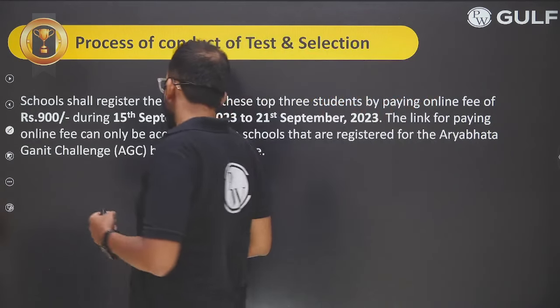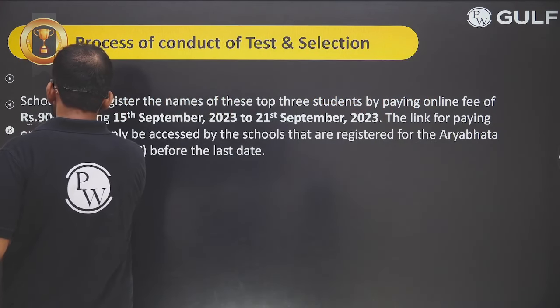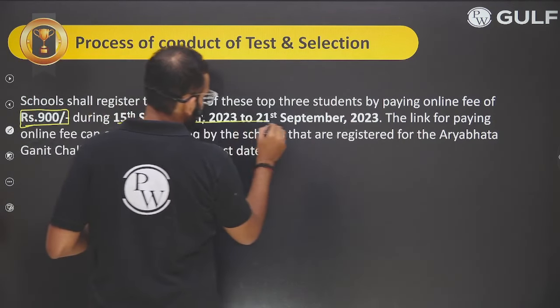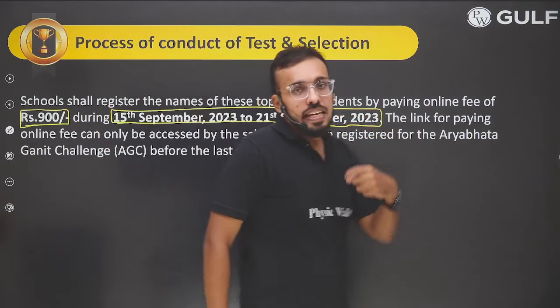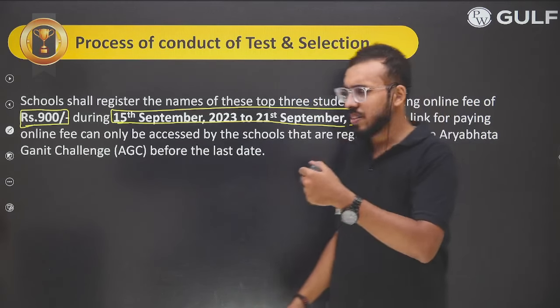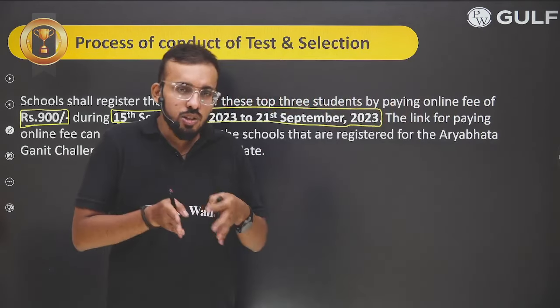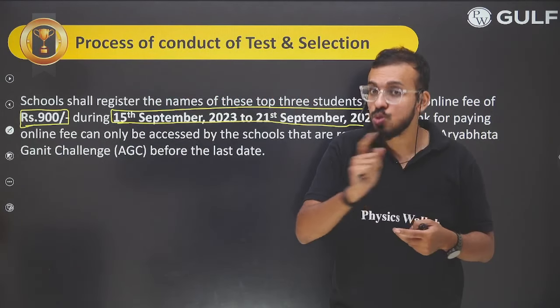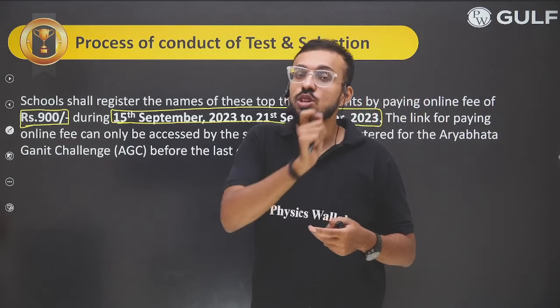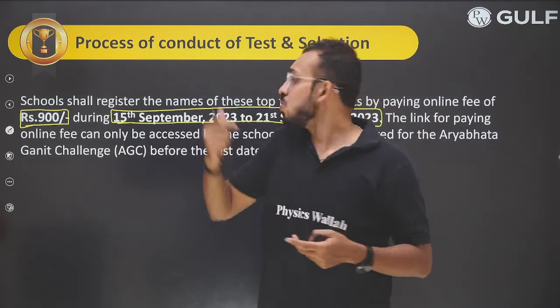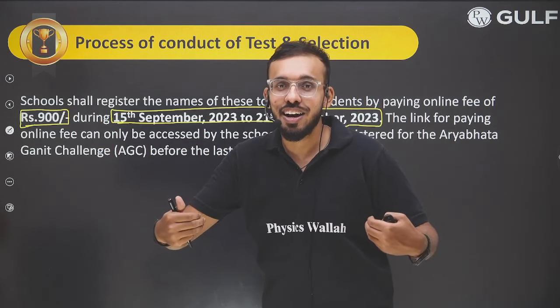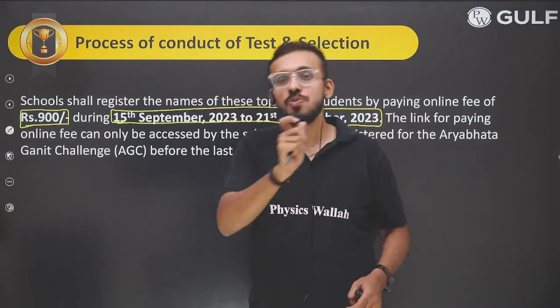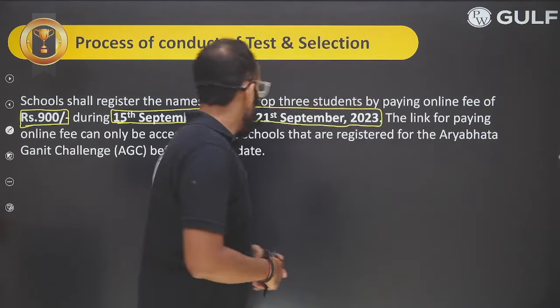Before Level 2, the school must register again and pay a fee of ₹900 between 15th September and 21st September 2023. CBSE will convey a payment link to the school. As a student you do not need to pay individually — the school pays the full ₹900. The first round remains completely free of cost.